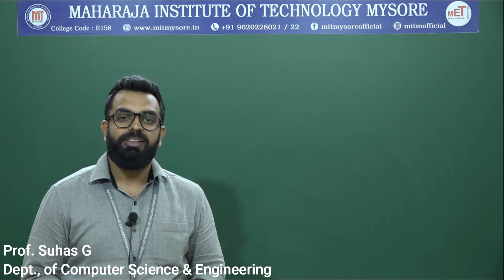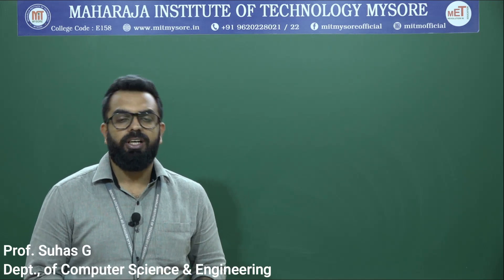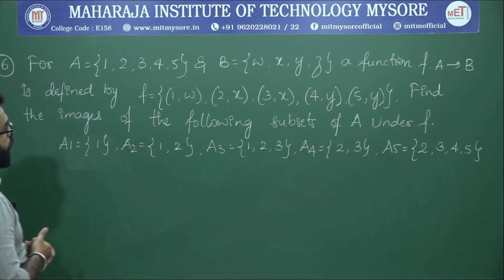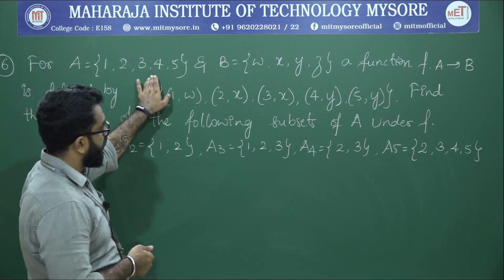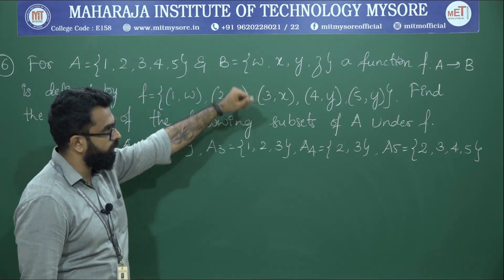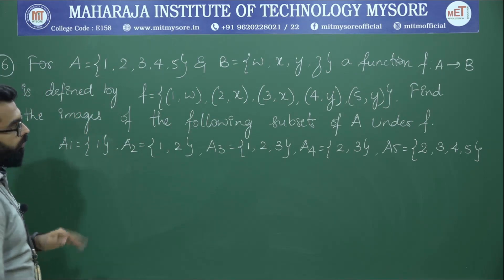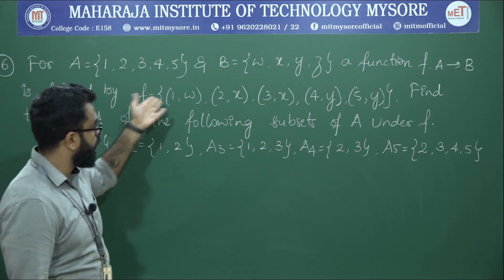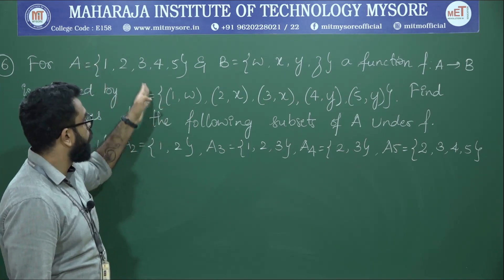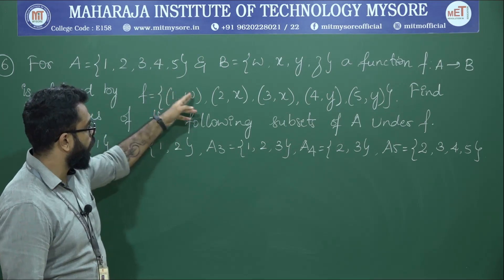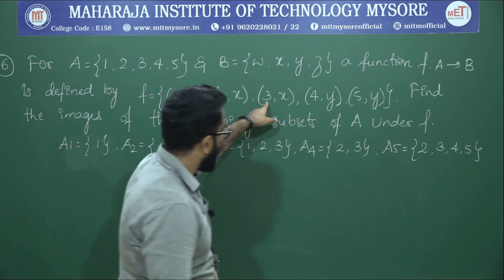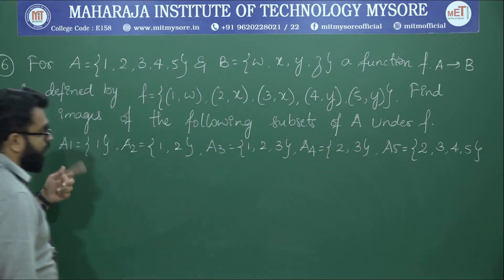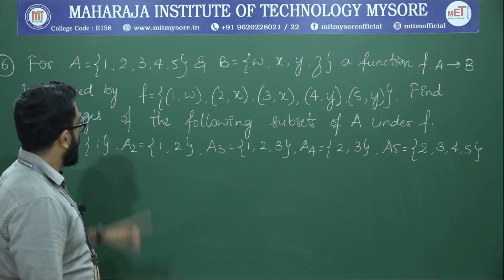Welcome to today's session where we continue our discussions on functions. We have two sets A and B, each consisting of few elements. A function f is defined from set A to B, given by the ordered pairs: (1,w), (2,x), (3,x), (4,y), (5,y), which represents a relation in the Cartesian product of the two sets.